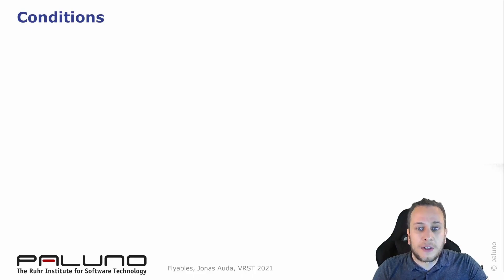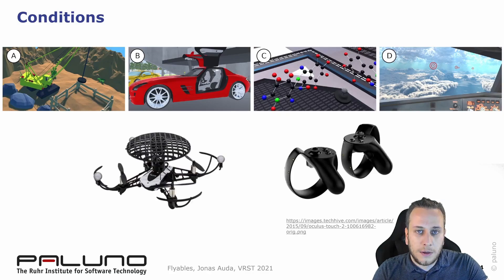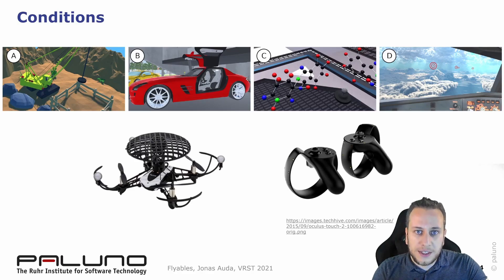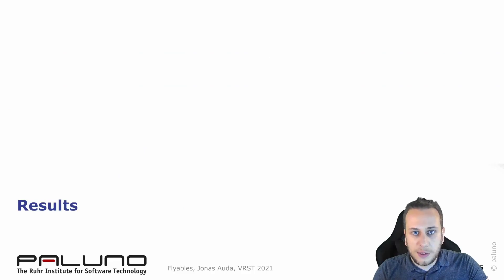In our study, we used the following conditions. Each participant solved the tasks in all four VR scenes — once using Flyables and once using state-of-the-art VR controllers. Our study followed a within-subject design and we counterbalanced the scene and input using a Latin square.